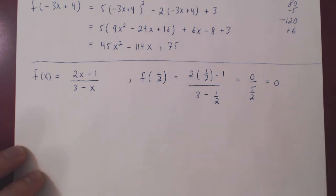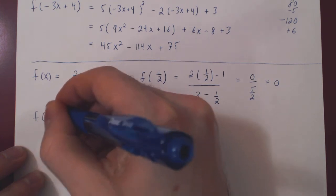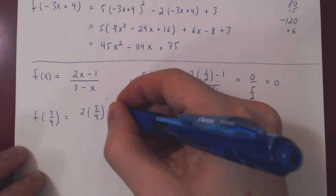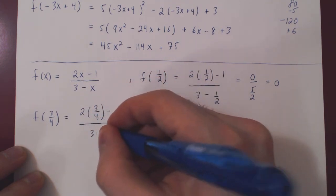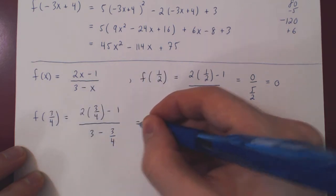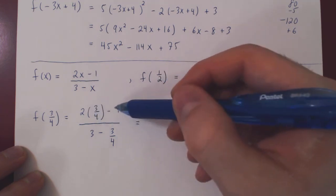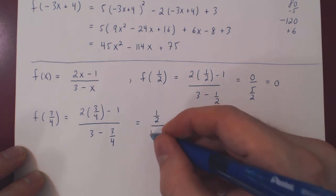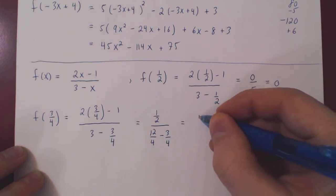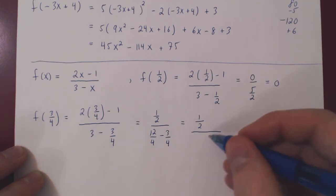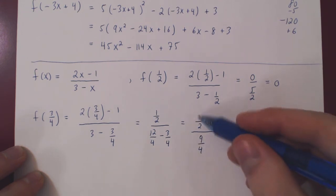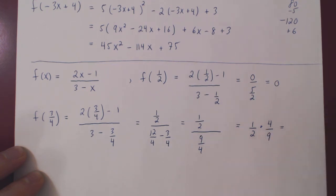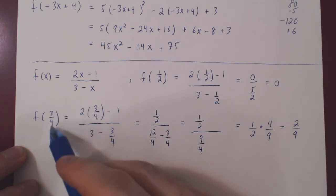Let's look at f of 3 quarters. This may be a bit more interesting. Replacing x everywhere by 3 quarters, we get 2 times 3 quarters minus 1 over 3 minus 3 quarters. Well, 2 times 3 quarters is 3 halves, minus 1 is 1 half. For the denominator, putting 3 over 4 gives 12 over 4, so 12 minus 3 is 9, giving 9 quarters. We are dividing 1 half by 9 quarters. If you divide by a fraction, you multiply by the reciprocal, so multiply by 4 over 9. But 4 over 2 is 2, so we are left with 2 over 9. So f of 3 quarters is 2 over 9.